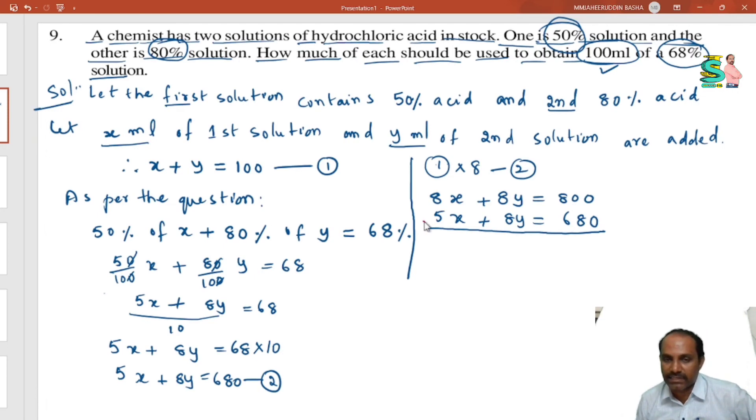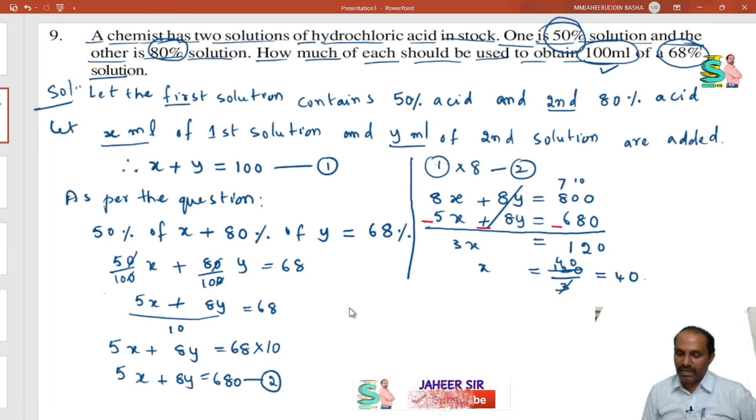Then you can subtract the second one. That is why you should change the symbols here, minus here, minus here also minus. Then what you will get? Y value cancels here. 3x is equal to, borrow 10, now here 7, 10 minus 8 is 2, 7 minus 2 is 1. Then x is equal to 120 by 3. 3 ones are 3, 3 fours are 12, so x value you will get 40.